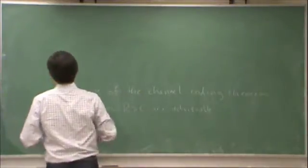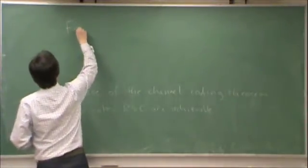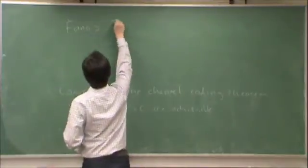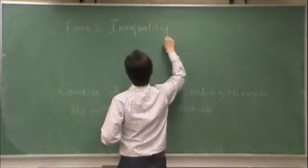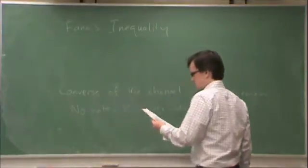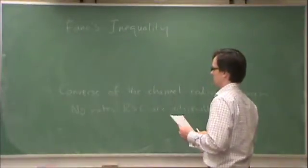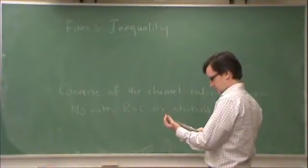We start off with Fano's Inequality. So Fano, along with Shannon, was one of the famous early information theorists.